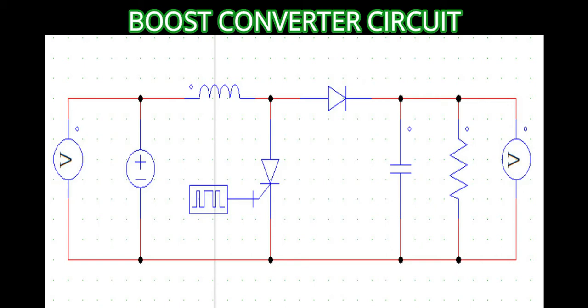Here I have taken the duty cycle to be 0.5, but you can adjust the duty cycle by adjusting the switching points of the gate-in block used in the circuit. Make sure to watch this video till the end to gain full knowledge of simulating a boost converter circuit in PSIM, and subscribe to my channel for more such videos. So let's get started.